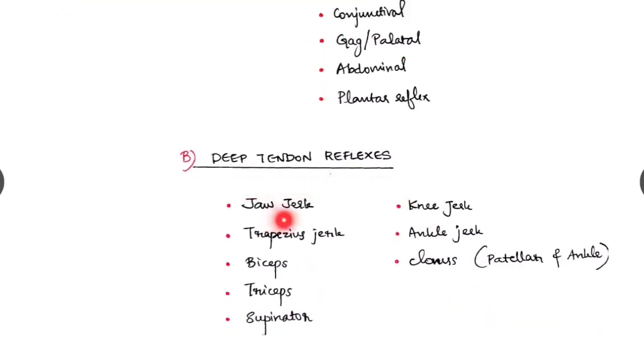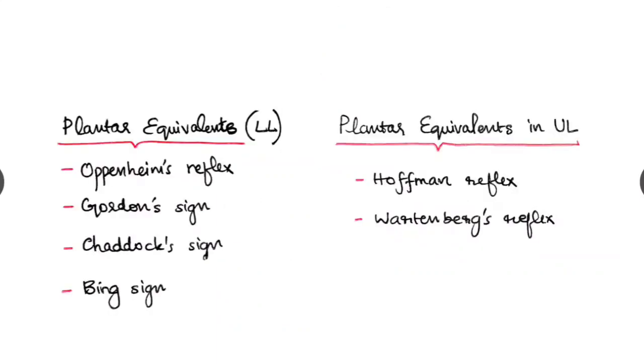Deep tendon reflexes are jaw jerk, trapezius jerk, biceps, triceps jerk, supinator jerk, knee jerk, ankle jerk and clonus. Clonus we look at patella and ankle. And the plantar equivalents, the lower limb especially must be learned.